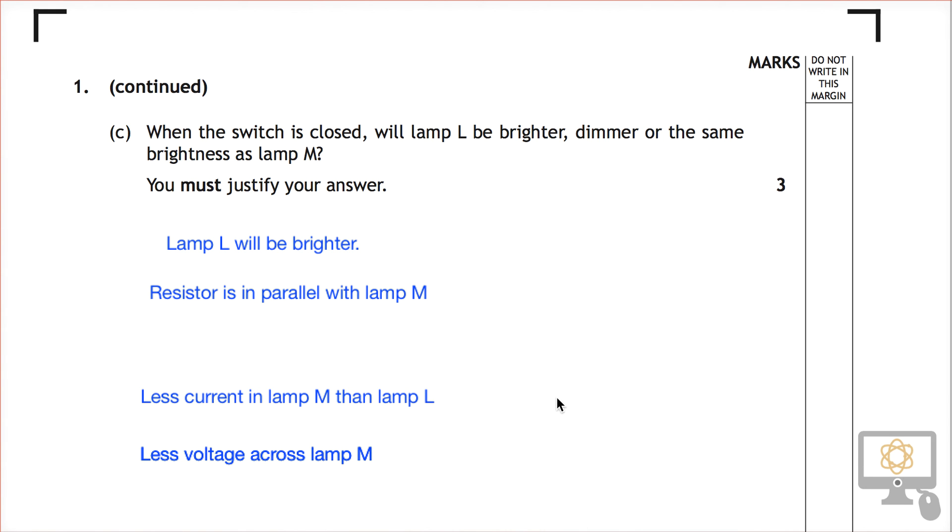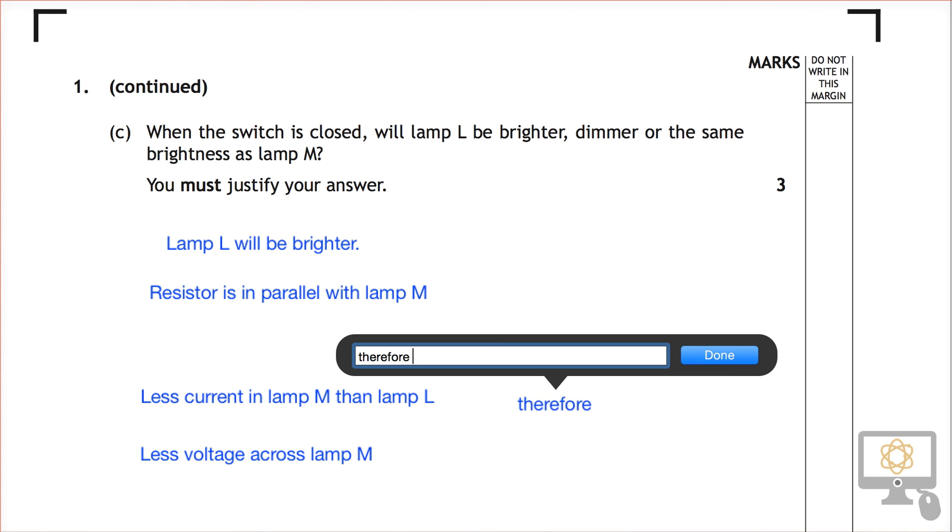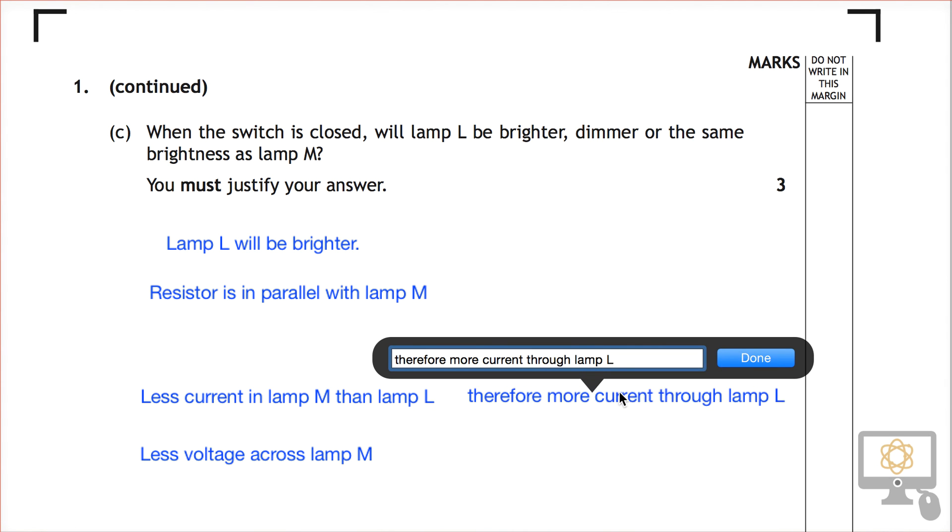Okay, I suppose for completeness, we should really add, therefore, more current through lamp L. And let's move that to the right place.